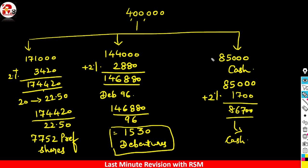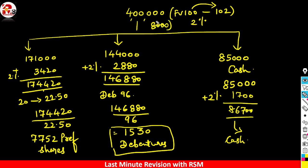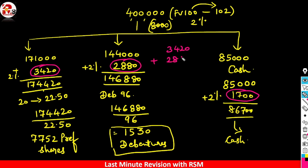Now we can also tally. Face value was 100 and redemption value is 102, so 2% premium on 4,00,000 is 8,000. Let's verify using the individual premiums: option 1 premium was 3,420, option 2 premium was 2,880, and option 3 premium was 1,700. Adding 3,420 plus 2,880 plus 1,700 gives a total premium of 8,000 — which matches perfectly.